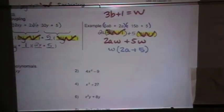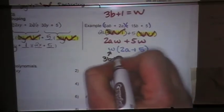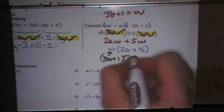And now I'm going to go back, and I'm going to replace w with 3b plus 1. So my final answer, this is 3b plus 1, 2a plus 5.